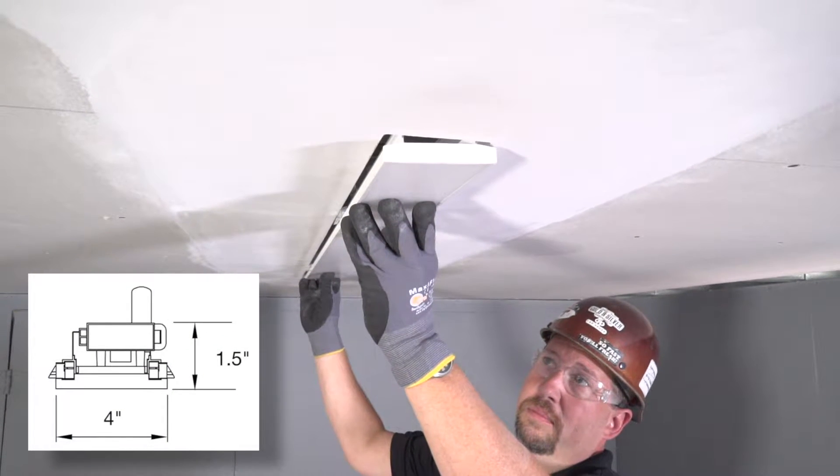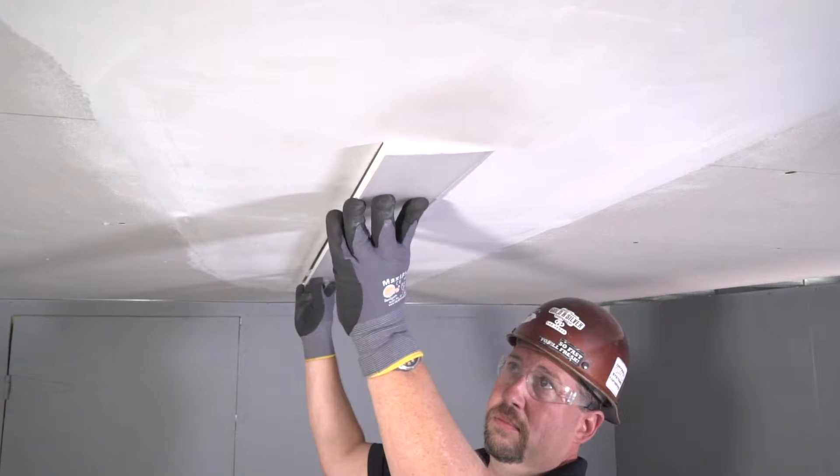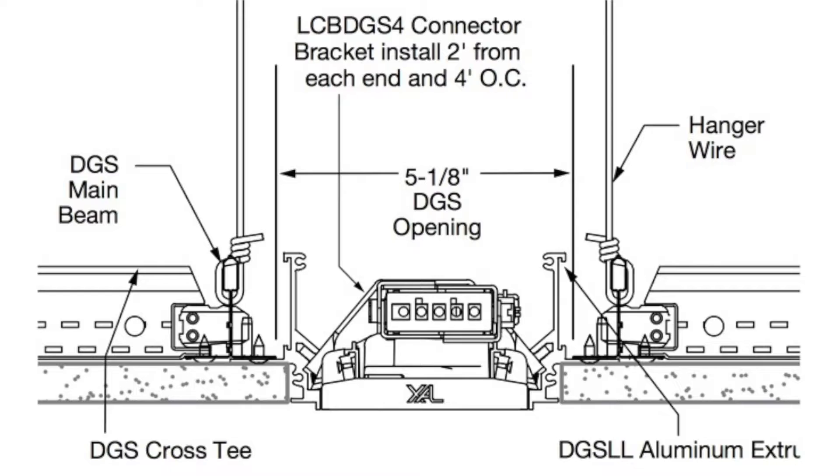The system fixture is the XAL zero-plenum linear LED light, which is only an inch and a half tall, and is installed from below after the drywall is finished.